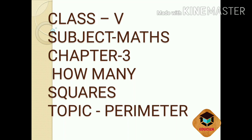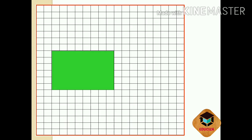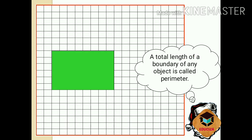Today in this video we are going to learn chapter number 3, how many squares, of class 5 maths. The topic is perimeter. What is the definition of perimeter? The total length of a boundary of any object is called perimeter.